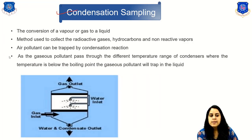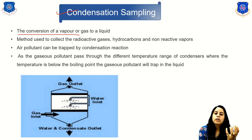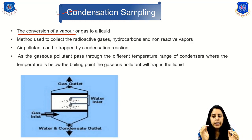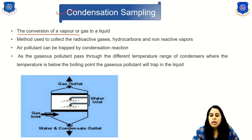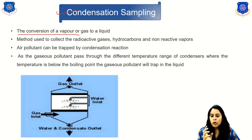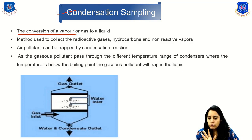The third gaseous sampling method is condensation sampling. This involves the conversion of vapor or gas to liquid. It is used to collect radioactive gases, hydrocarbons, and non-reactive vapors. Air pollutants are trapped by condensation as gaseous pollutants pass through a condenser at a temperature below the boiling point of the pollutant, trapping them as liquid. Clean gas exits through the gas outlet, while water and condensate are collected as output.